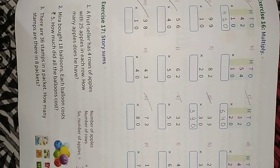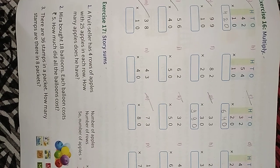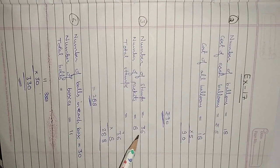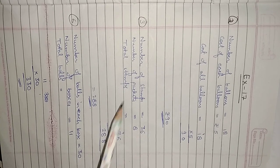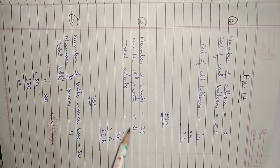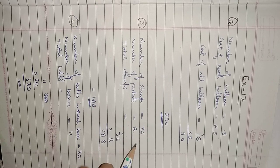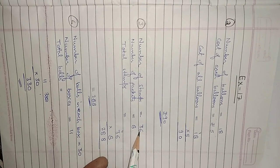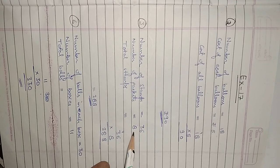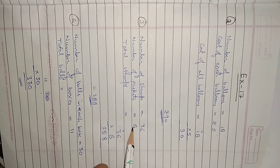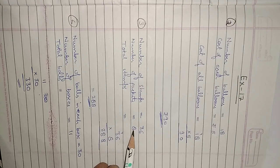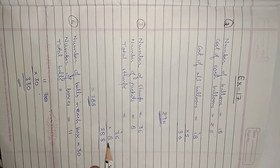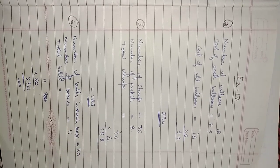Question number 3: There are 36 stamps in a packet. How many stamps are there in 8 packets? Number of stamps in one packet is 36 and number of packets is 8. We have to find the total stamps. So we multiply 36 by 8 and we get 288. The answer is 288.